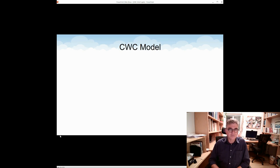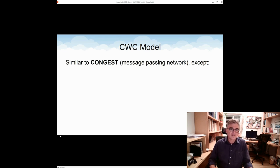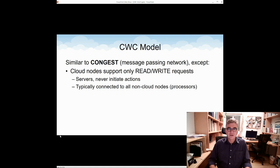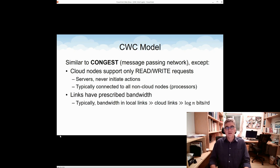So now that I hopefully convinced you that the CWC model is useful, let's recap what are the main ingredients of the CWC model. So essentially the model is just congest with a twist, and the twist being the cloud nodes. What distinguishes cloud nodes from other nodes is that these nodes do not carry out computation. They only support read and write requests that arrive from other, from non-cloud nodes. And the other distinguishing feature of cloud nodes is that typically they are connected to all or most of the processes. So this is the main twist in the CWC model.